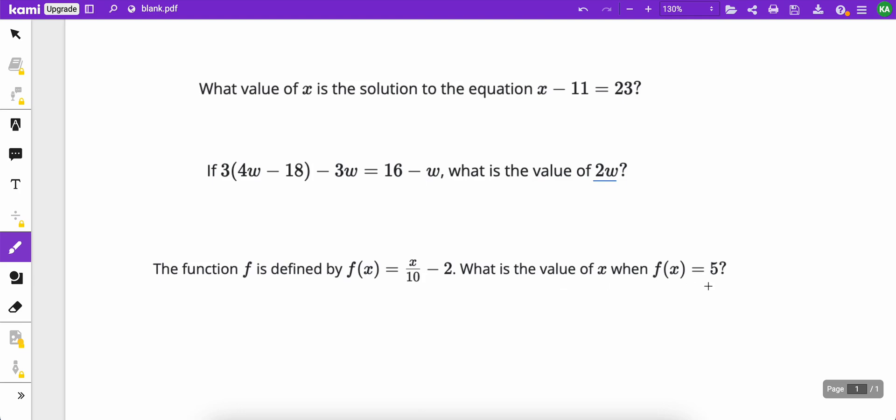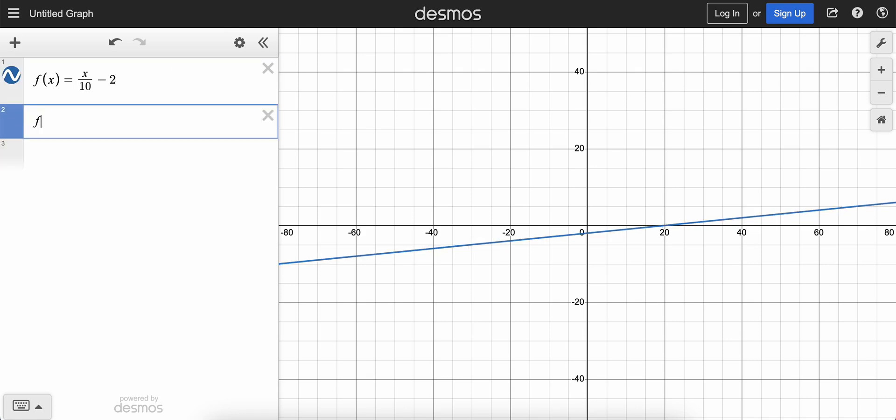Now it says, what's the value of x when f of x is equal to 5? So we've got two options. We can either type in a new equation here in a new line and say f of x equals 5. And you can see that over here, they intersect, and the x value is 70. So 70 would be the answer.